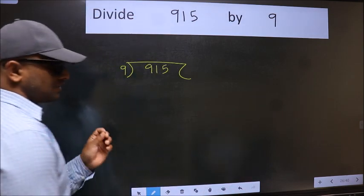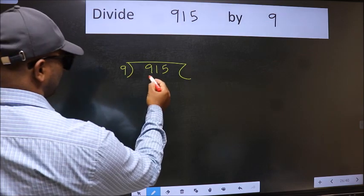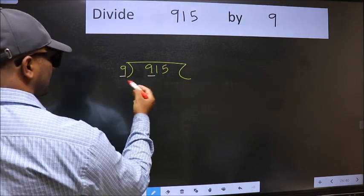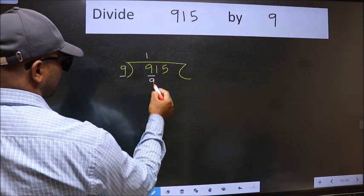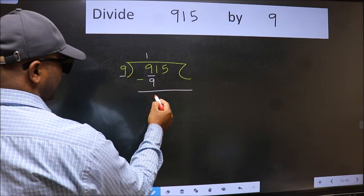This is your step 1. Next. Here we have 9 and here 9. When do we get 9 in 9 table? 9 once 9. Now we should subtract. We get 0.